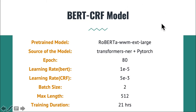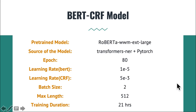For the BERT-CRF model, we also use RoBERTa. For the CRF part, we use an open-source Transformer implementation as a reference, modify it, and use the output of BERT as a feature vector for CRF. For hyperparameters, max sequence length is 512, batch size is 2, BERT learning rate is 1e-5, and CRF learning rate is 5×10⁻³.